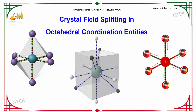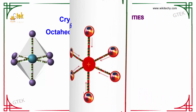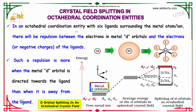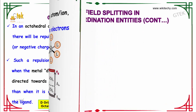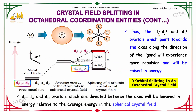In an octahedral coordination entity, six ligands surround the metal d-orbital. The repulsion between the metal d-orbital electrons and the ligand electrons is greater when the metal d-orbital is directed towards the ligand than when it is directed away from the ligand. Thus, the dx²-y² and dz² orbitals, which point towards the axes along the direction of the ligands, will experience more repulsion and will be raised in energy.